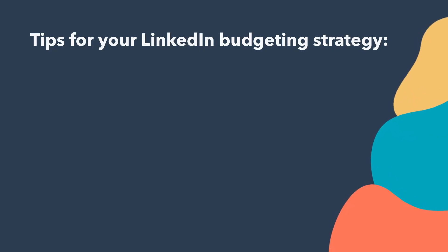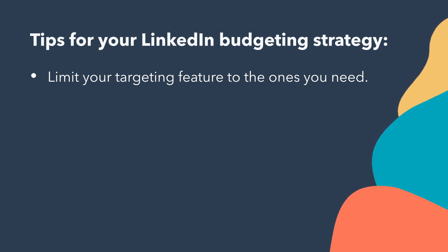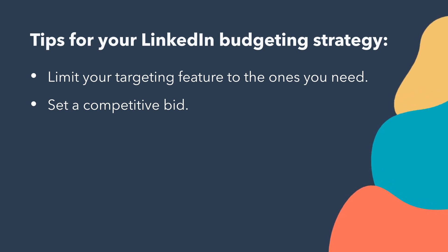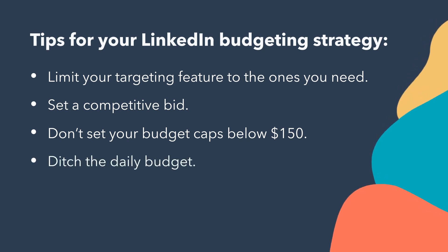LinkedIn offers tips for a stellar budgeting strategy: limit your targeting features to those you need — with a lower budget, zero in on criteria to get a smaller user pool. Set a competitive bid at the high end of the suggested range to improve your chances of winning at auction. Don't set budget caps below $150. Set a generous daily budget to reach more of your audience. If you're having trouble delivering impressions, try setting a total budget spent over time rather than capping a daily dollar amount — this maximizes ad reach. Check out the free ad calculator link in the video description.